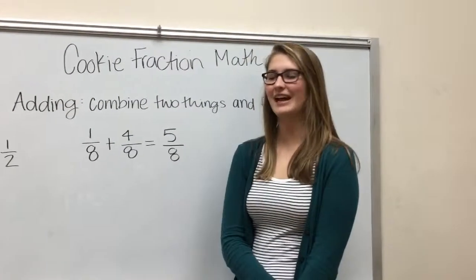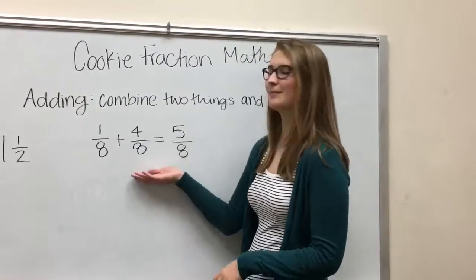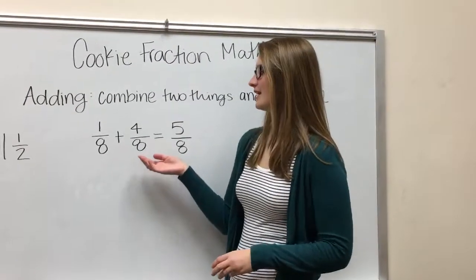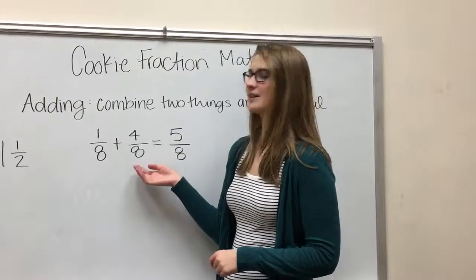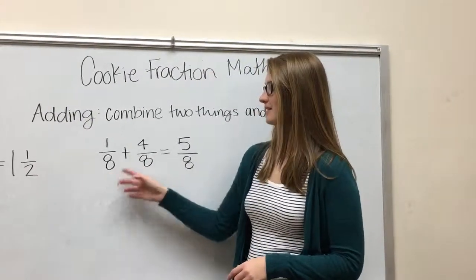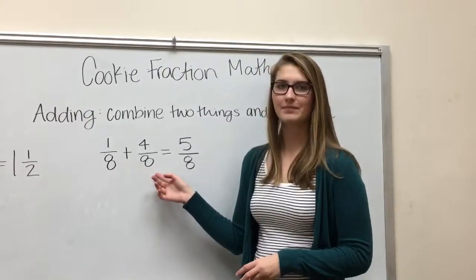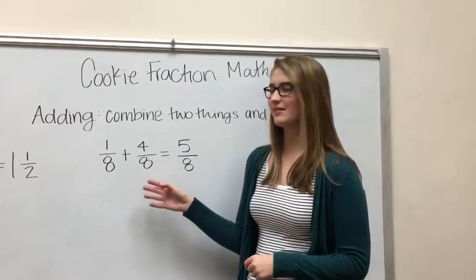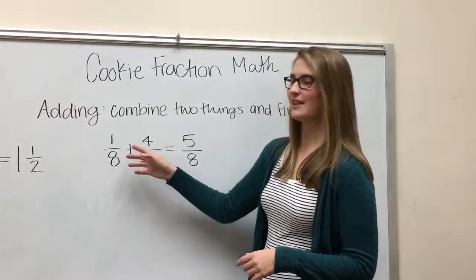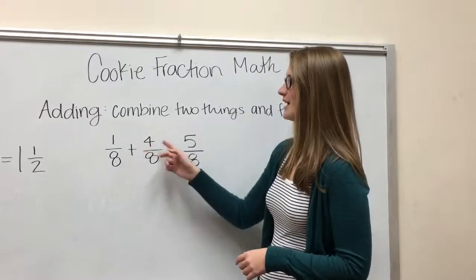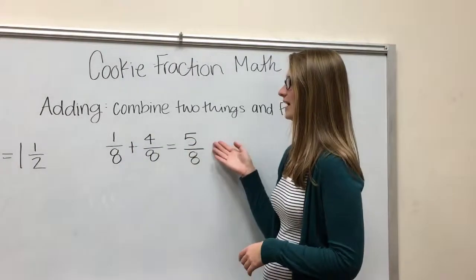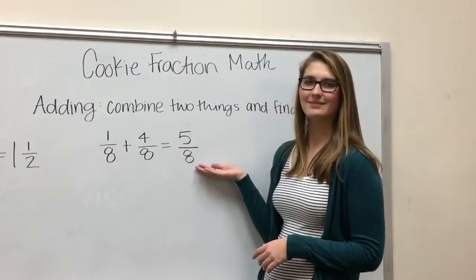Another example of adding is a problem like we have here. You can see that the parts of the whole are the same size because the denominators are the same number. So because of this, all you have to do is add the numbers on the top. So you have one and four — that gives you five over eight.